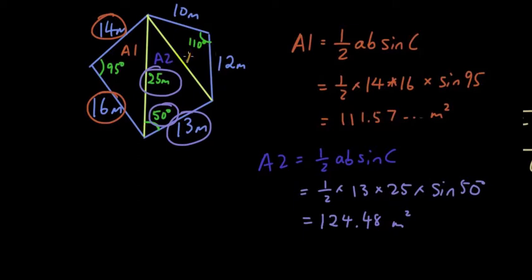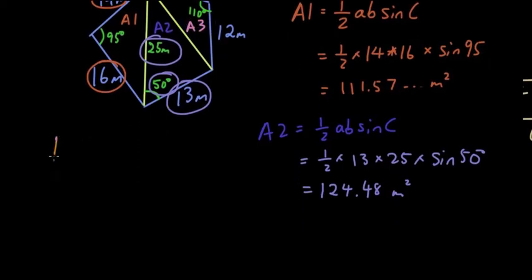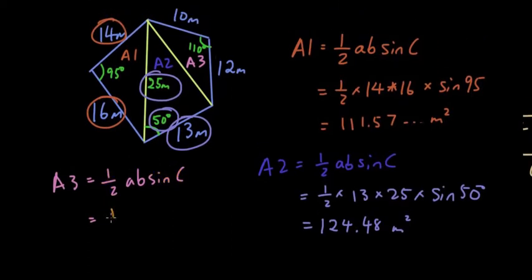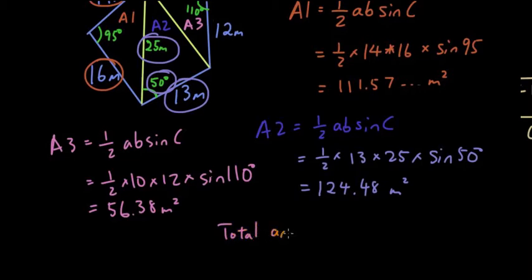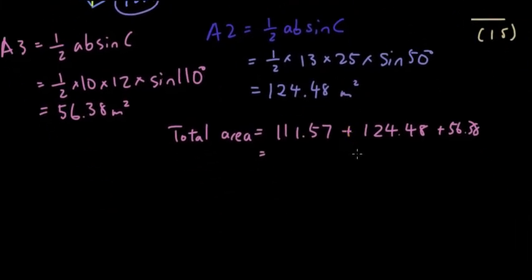And then we got another area. Let's use a different colour again. Area three. So again, half AB sine C. Fast forward through that one. So now the total area is simply these three areas added together. So 111.57. Make sure you write down all the decimal numbers because you're not supposed to round it before you get the final answer. Plus 56.38. Add all that together. And the answer is 292.43 meters squared. Awesome.